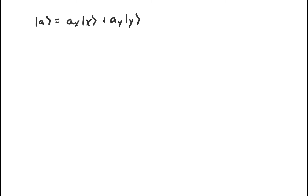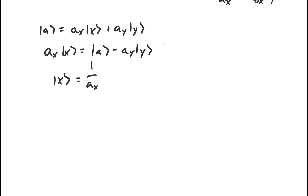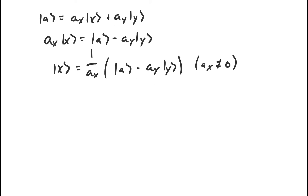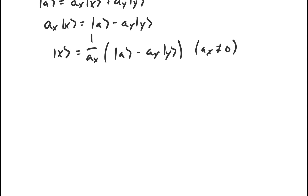We can figure out what x is in terms of a by rearranging: a_x · x = a − a_y · y, and so long as a_x is not equal to zero, we can divide by a_x to find x in terms of a. If a_x is zero, then a is just a scalar multiple of y, and we can apply the same argument replacing y with the vector a instead. So we've found how to express x in terms of a and y — if x and y span the plane, it must also be the case that a and y span the plane, because any linear combination of x and y can be rewritten as a linear combination of a and y.